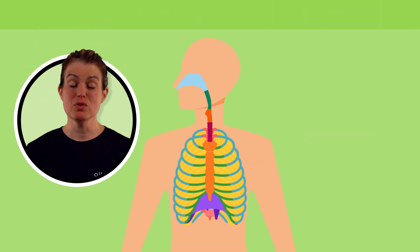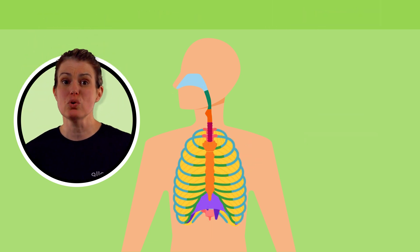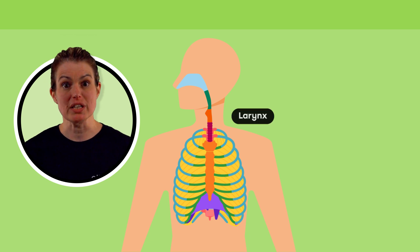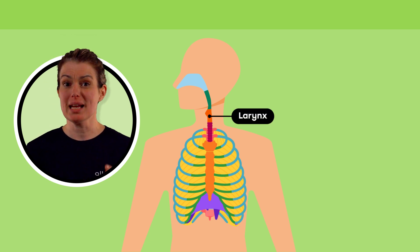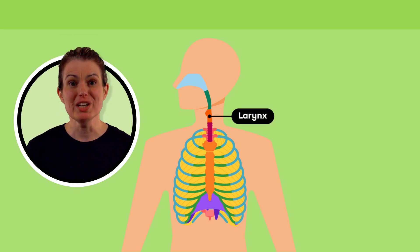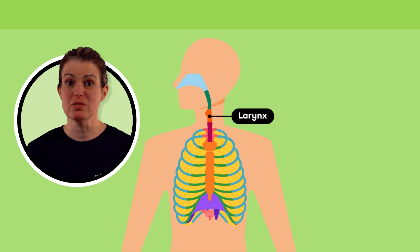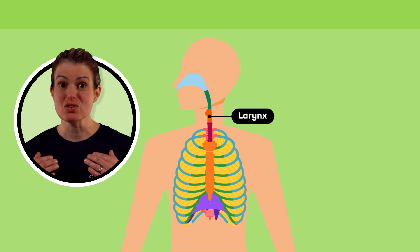Sometimes the movements of the respiratory muscles become uncontrolled and involuntary, and the muscles of the larynx contract. This is when hiccups occur. The sound you hear is actually a vibration of the vocal cords caused by air struggling to enter the trachea.